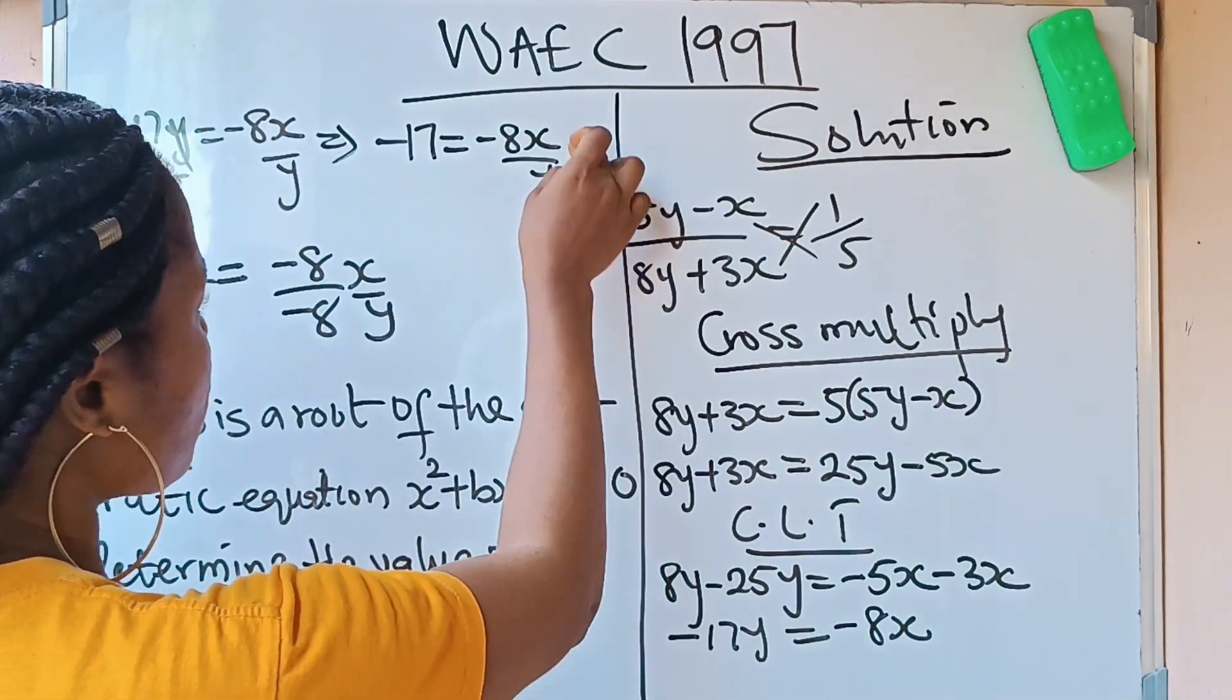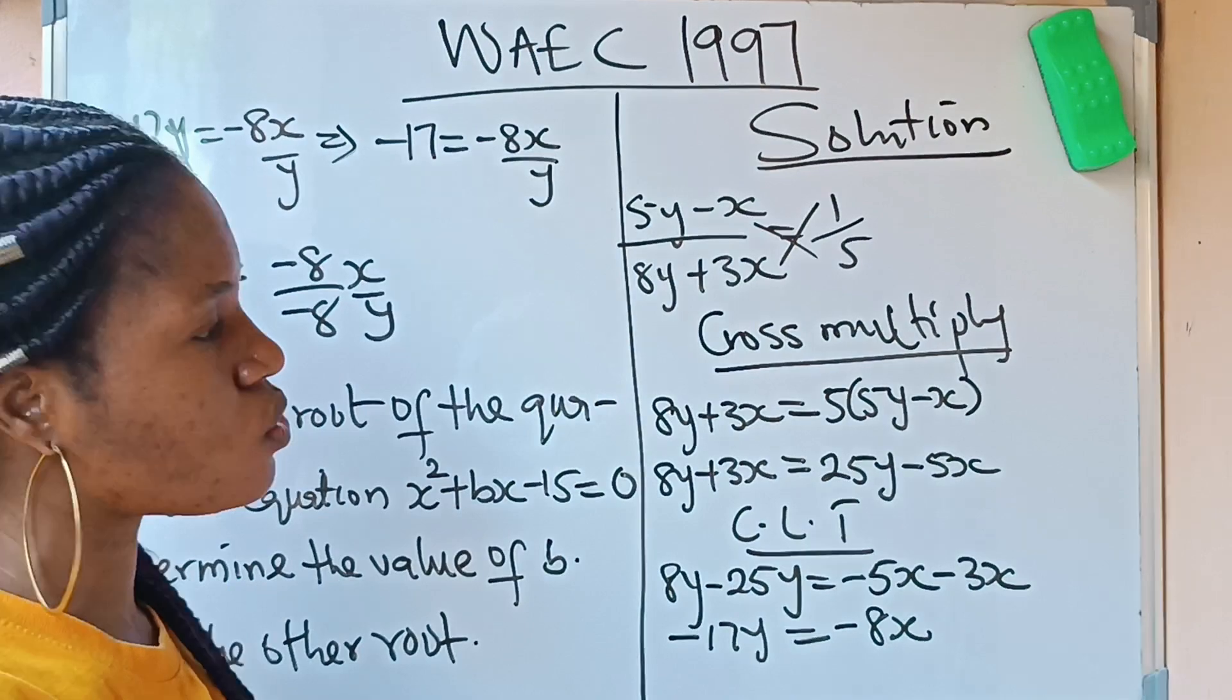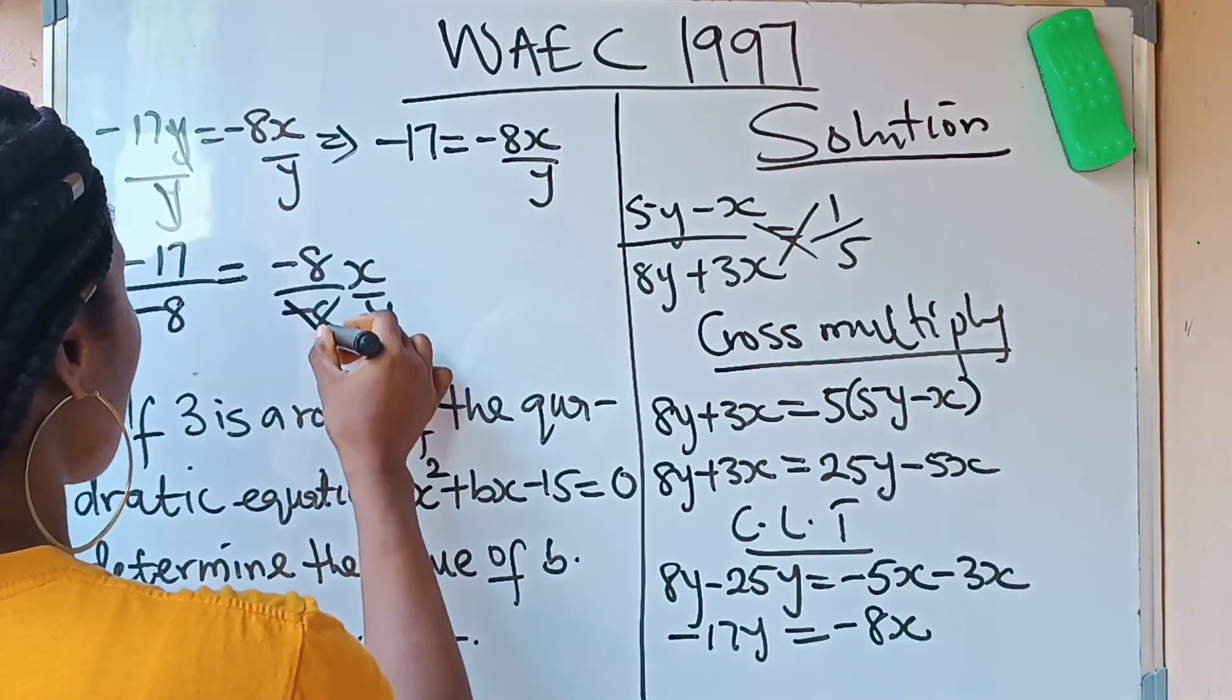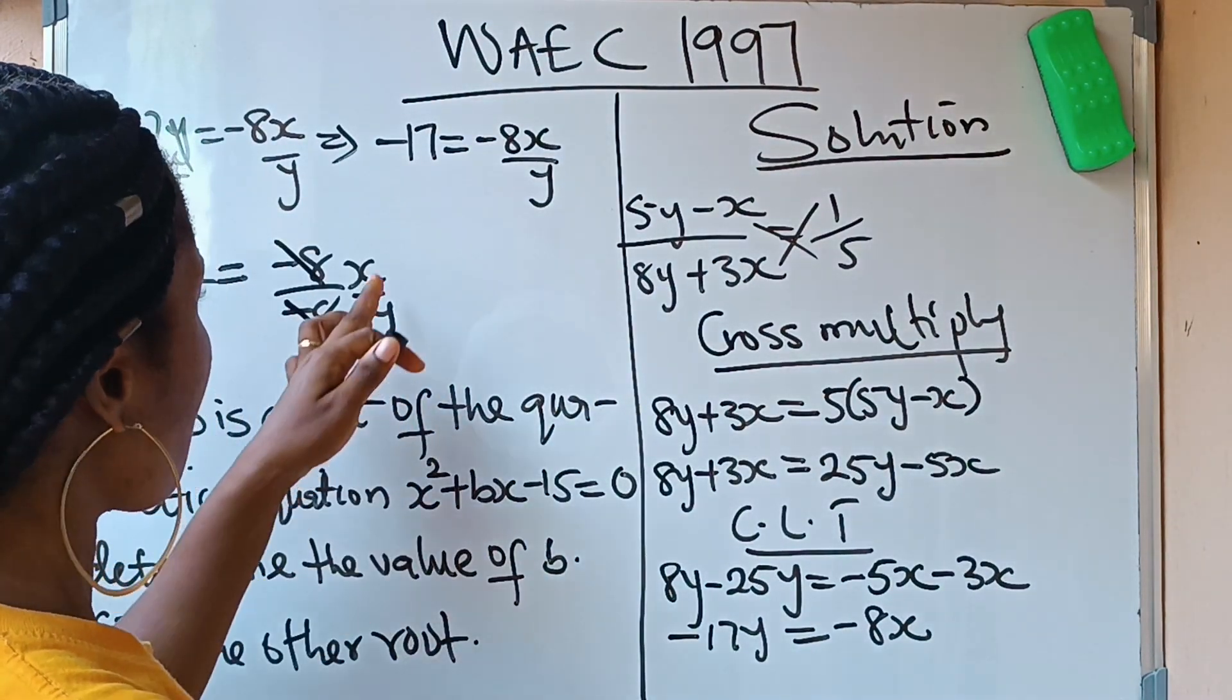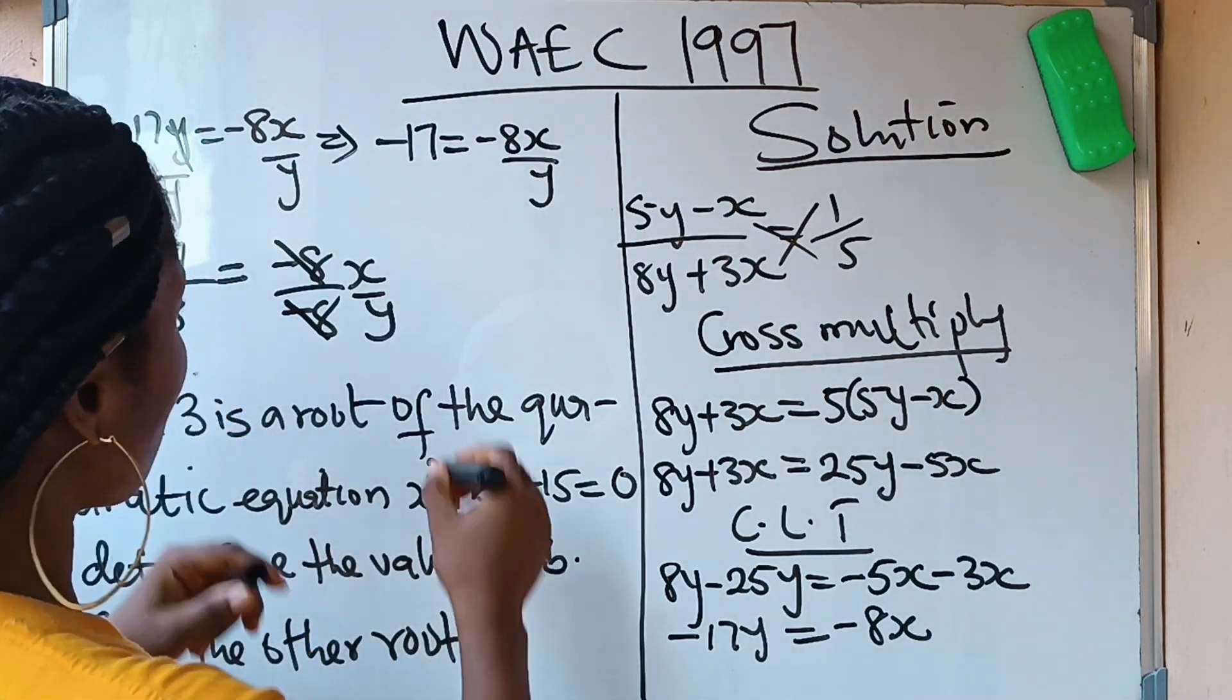So you notice that this -8 will cancel this -8. Then negative will cancel negative. So you are left with the final result...